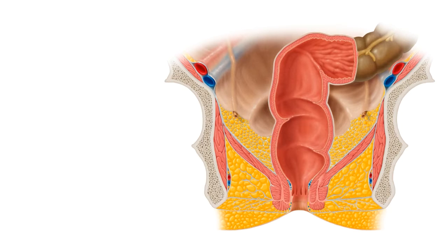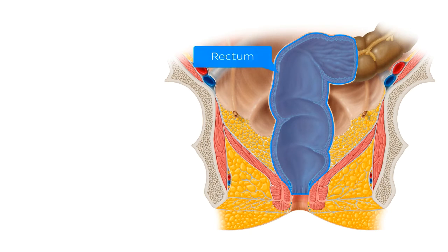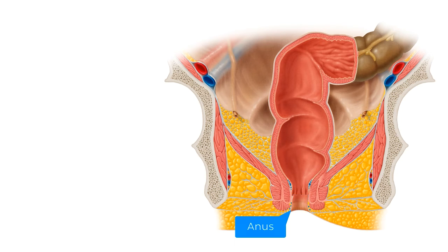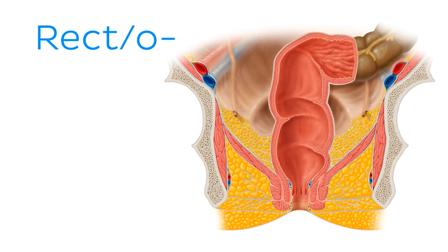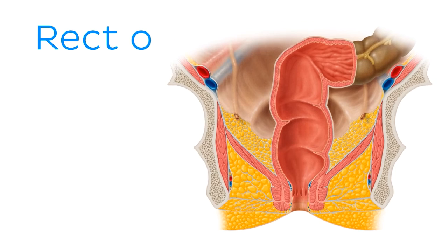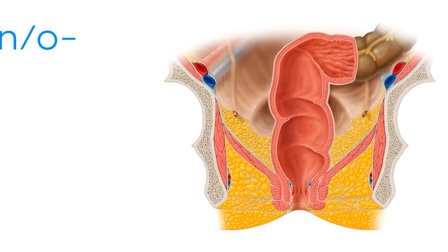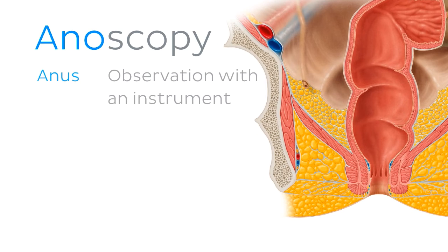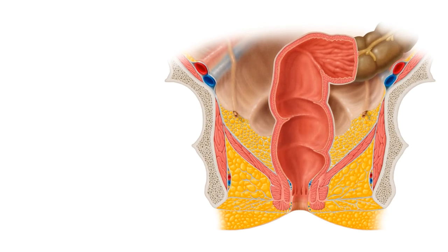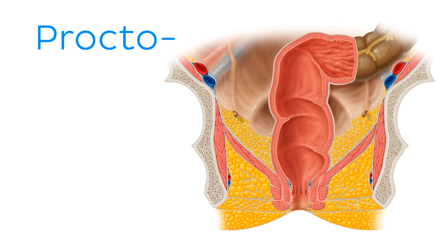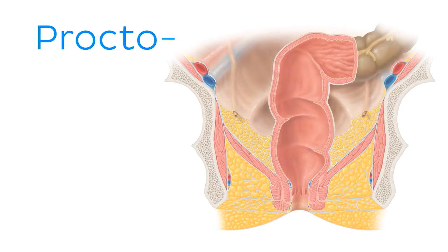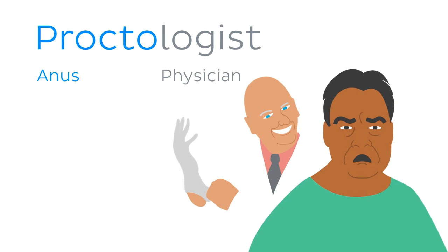Coming up on the rear end of GIT terminology, quite literally, we finish the digestive journey at the rectum and anus. And unsurprisingly, the root words which specifically deal with these two organs are 'rect' or 'recto', and 'an' or 'ano'. That being said, there is another term which is also commonly used in terms related to the rectum and anus, and that is 'procto', which comes from the Greek translation of anus. A proctologist is a doctor who specializes in disorders of the rectum and anus.